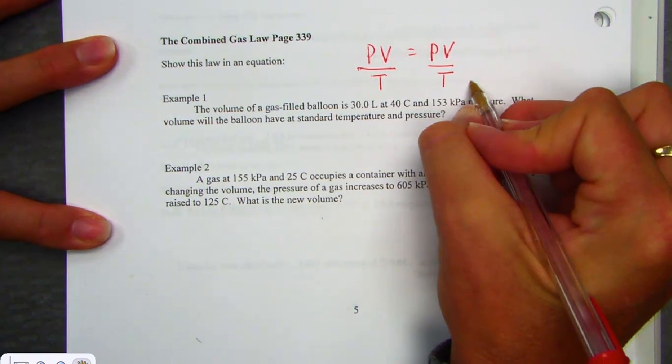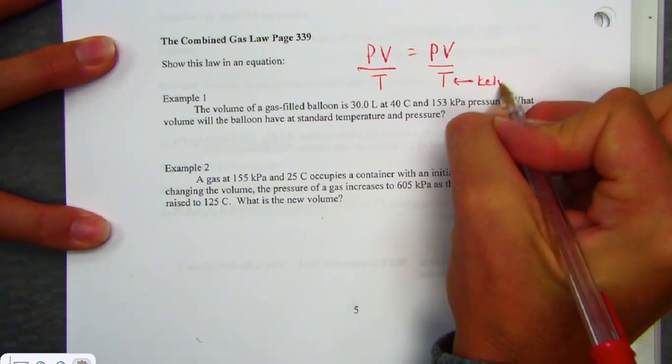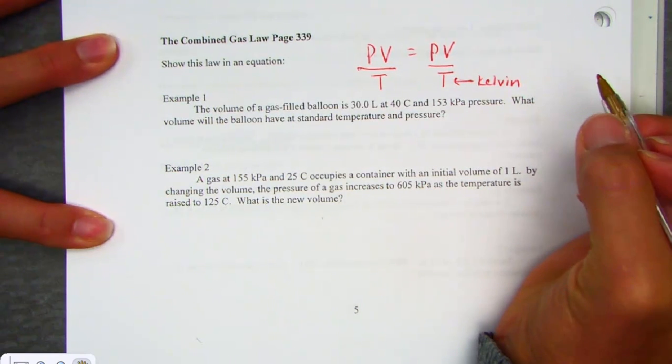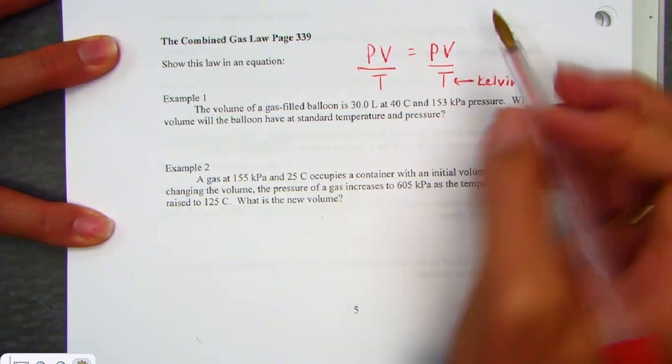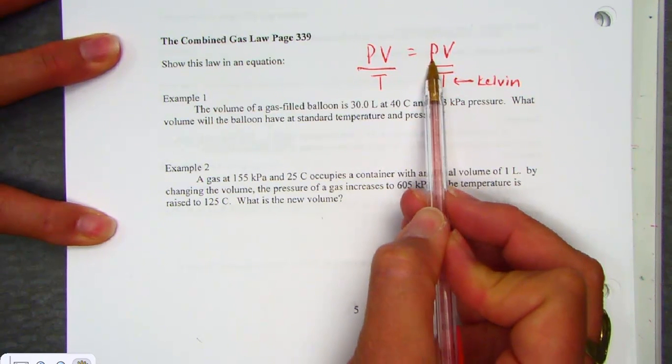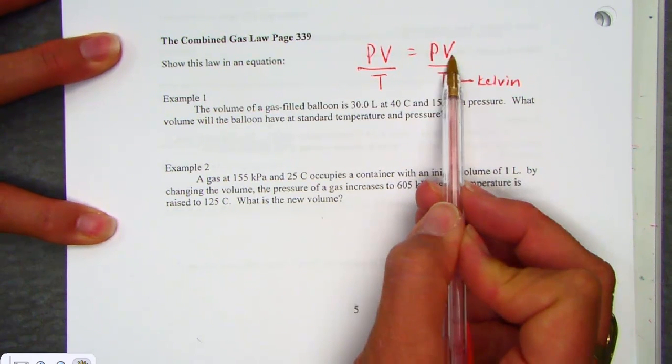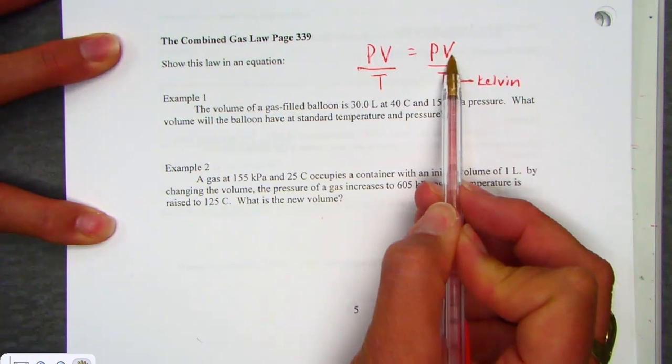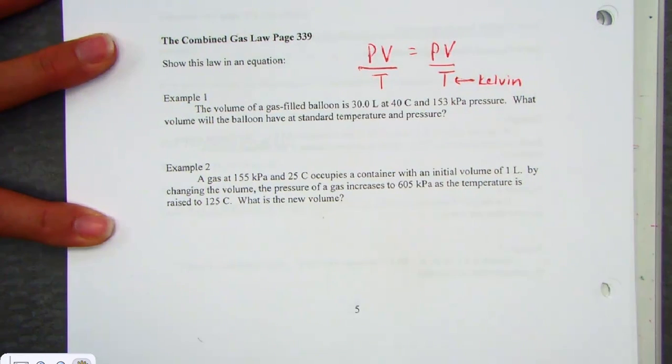A couple of items we have to remember. Temperature always in the Kelvin scale, so that's always in our Gas Law chapter. It doesn't matter what unit the pressure is, just that they're the same unit, and that's true for the volumes as well. They just have to be the same. But temperature must be in Kelvin.